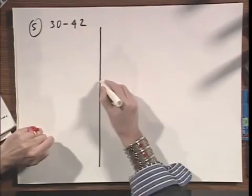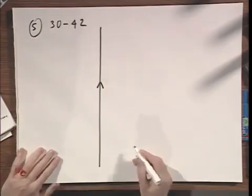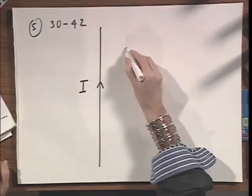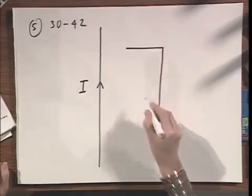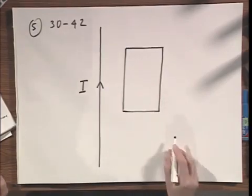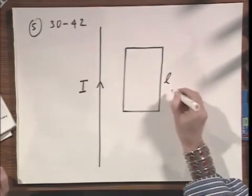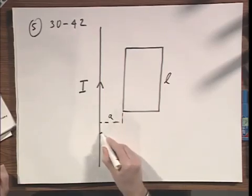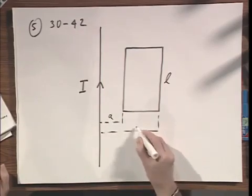A little bit of a mathematical problem, perhaps. I have a current I here, and I have here a loop, and the loop has length L. This distance is little a, this distance is little b.